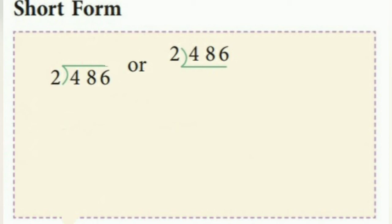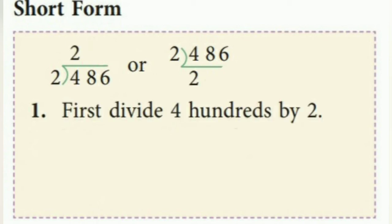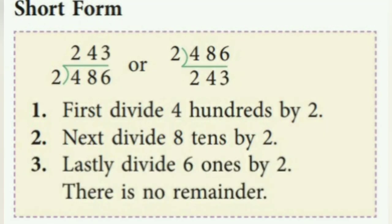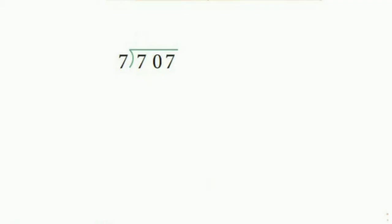In short form: here we have to divide 486 by 2. At the hundreds place we have 4, so 2 twos are 4. At the tens place we have 8, so 2 fours are 8. Then lastly, divide 6 by 2: 2 threes are 6, so we write 3. There is no remainder. The quotient is 243.